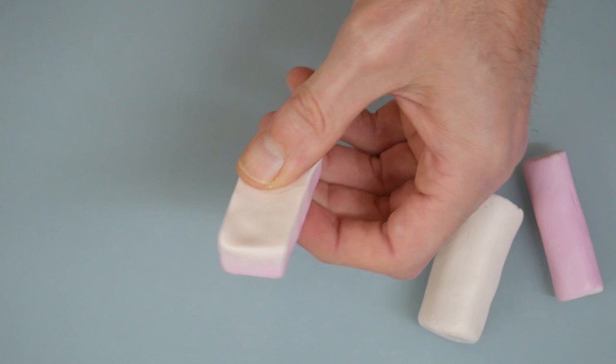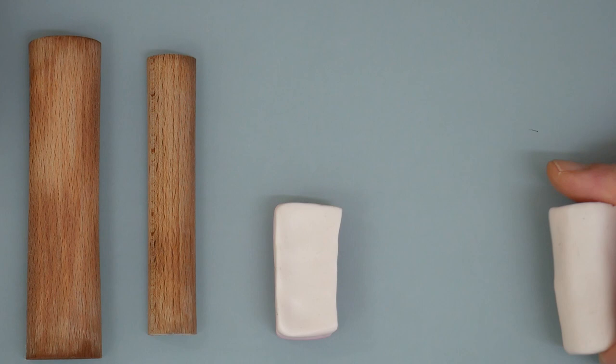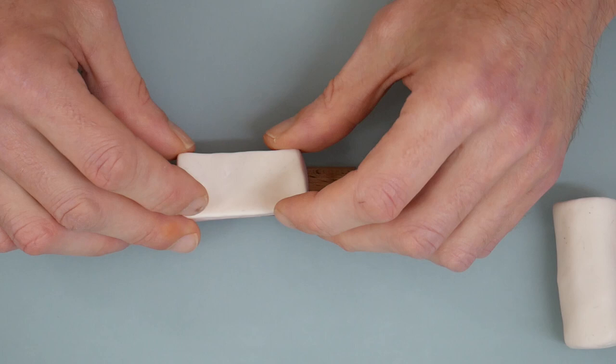For this we'll be using these wooden tools that I was showing you in the beginning. I was soaking them in water for a few minutes so the clay won't stick to it. Then we'll have this smaller piece on the dark side.